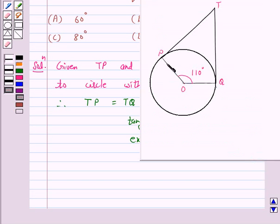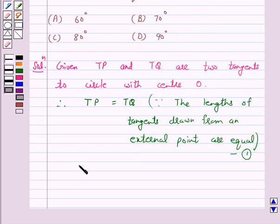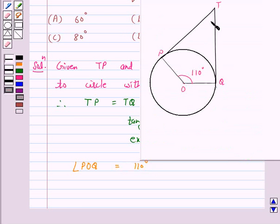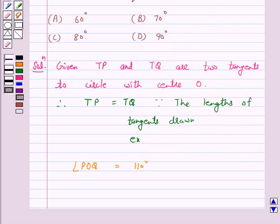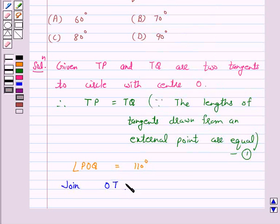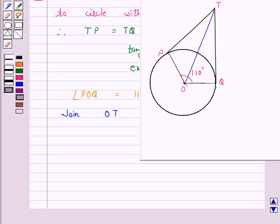Again, we are given angle POQ is equal to 110 degrees. Now join OT. Now we know that the tangent at any point of a circle is perpendicular to the radius to the point of contact. Therefore, angle OPT is 90 degrees and similarly angle OQT is 90 degrees.